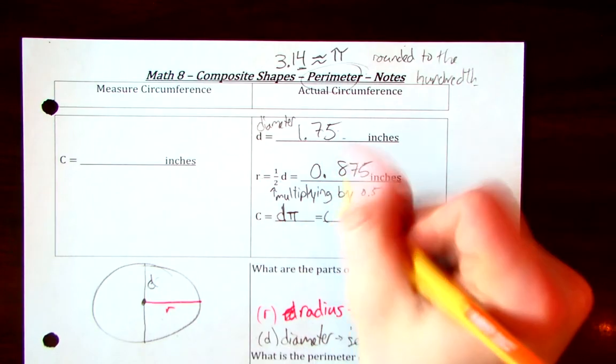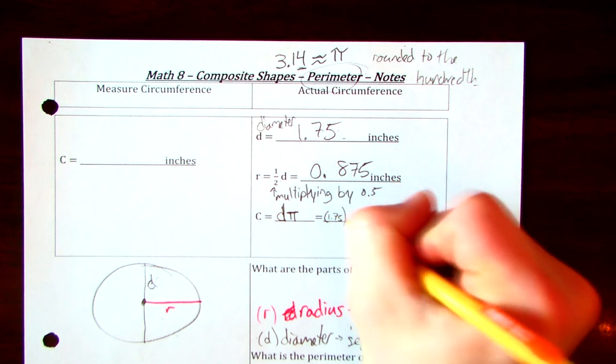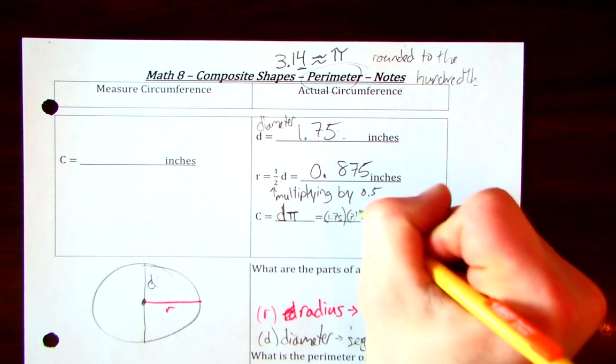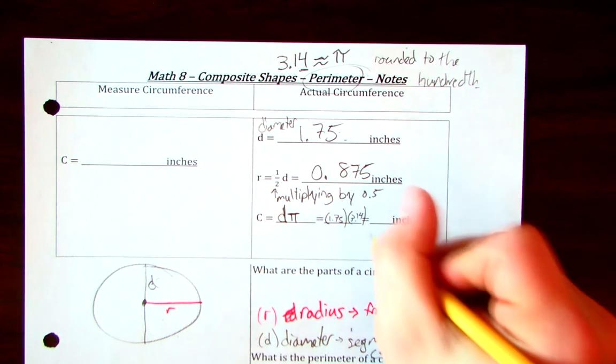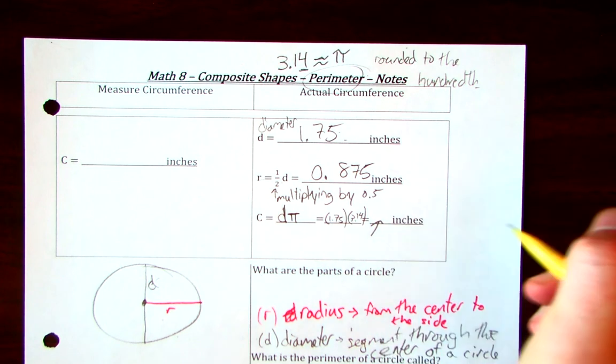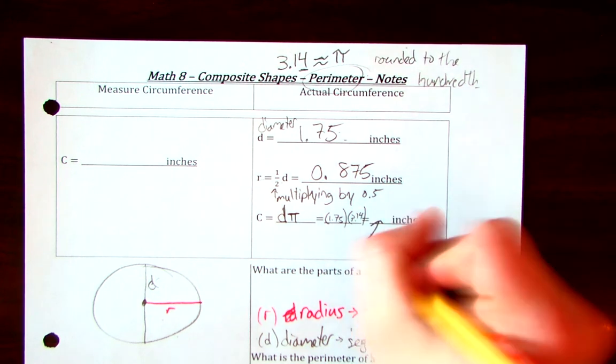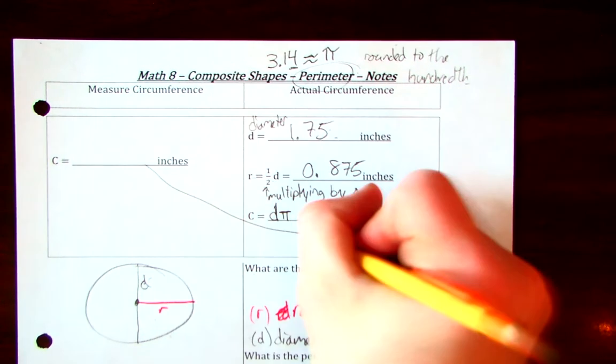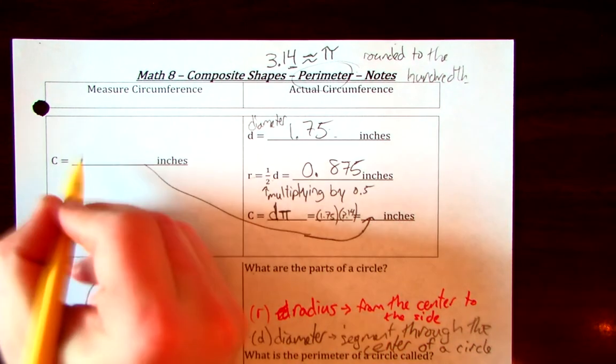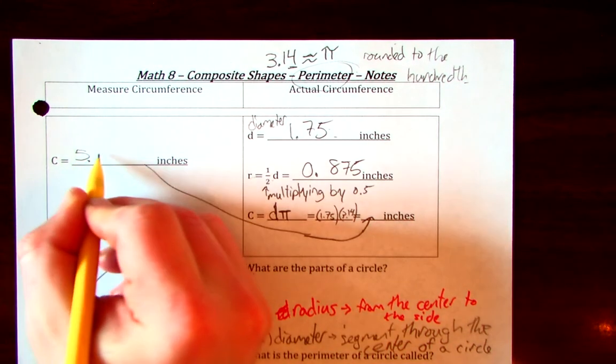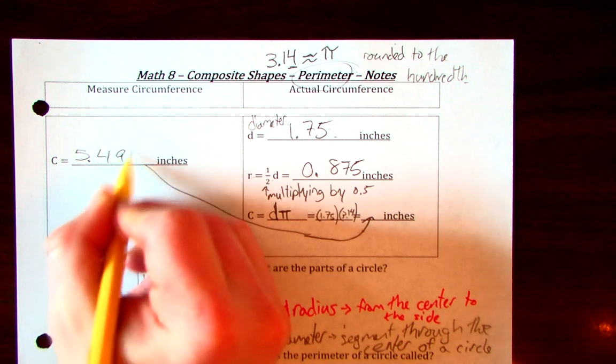We have our diameter, which is 1.75, times pi, which is 3.14. And, well, making sure that we have enough space, that's going to be our circumference, which, over here, is where we have. We are going to say that's going to be 5.495 inches.